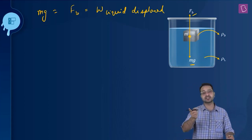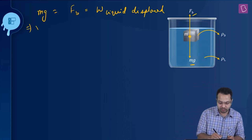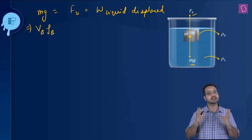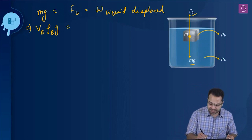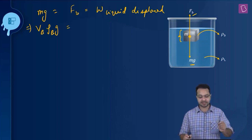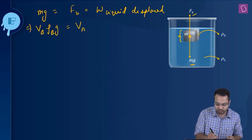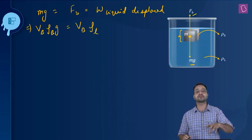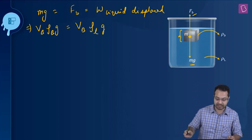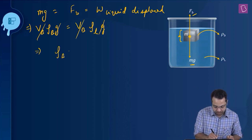Since we want the relationship between densities, we convert everything in terms of density. The mass of the body is written as the volume of the body multiplied by the density of the body — multiplied by g gives the weight. Since the body is completely immersed, the volume of liquid displaced equals the volume of the body itself, multiplied by the density of the liquid, multiplied by g gives the weight. V_b and g cancel, giving ρ_b = ρ_l.